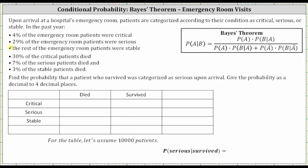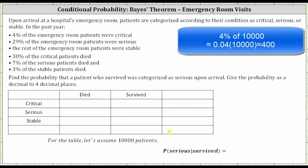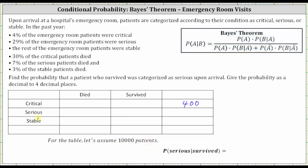4% of the emergency room patients were critical. 4% of 10,000 is 400, so the total for the critical row is 400. 29% of the emergency room patients were serious. 29% of 10,000 is 2,900, which gives us the total for patients classified as serious. The rest were classified as stable: 10,000 minus 400 minus 2,900 is equal to 6,700.